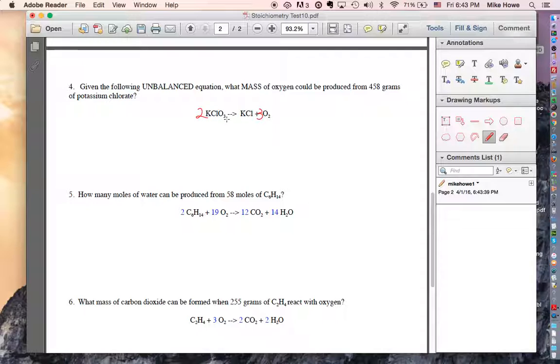Like the oxygen was three, so you need to multiply by two to get six. So that gave you two K's and two Cl's. You have to put a two over here to make it balanced. So there's our balanced equation.